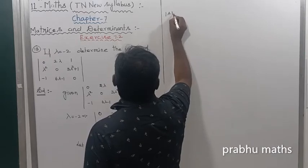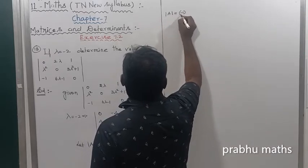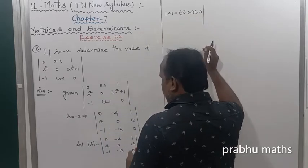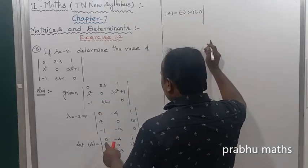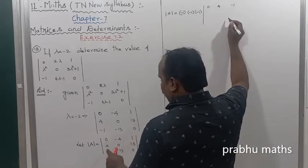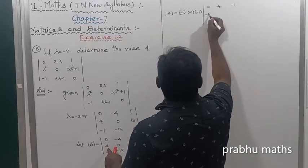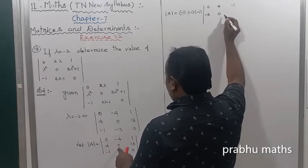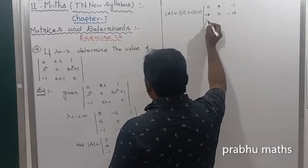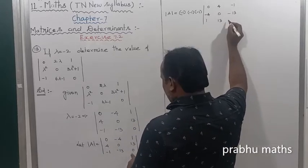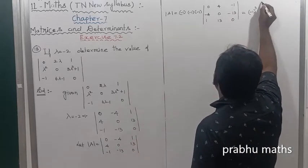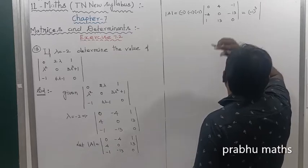The modulus of A is equal to: minus 1, next one minus 1, next one minus 1 — so 3 minus 1 ones — so this one, taking the outside minus 1, this one is going to be 0; next one 4; next one minus 1; next one minus 4; next one 0; next one minus 13; next one plus 1 plus 13; so next one 0. That value of this one is equal to minus 1 to the power 3 into 0.